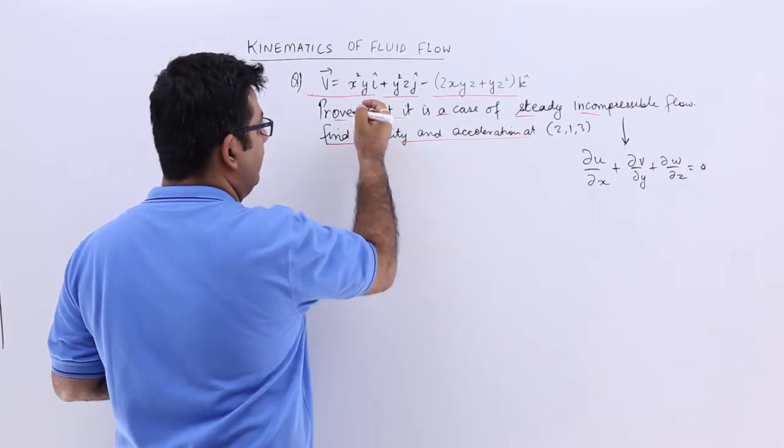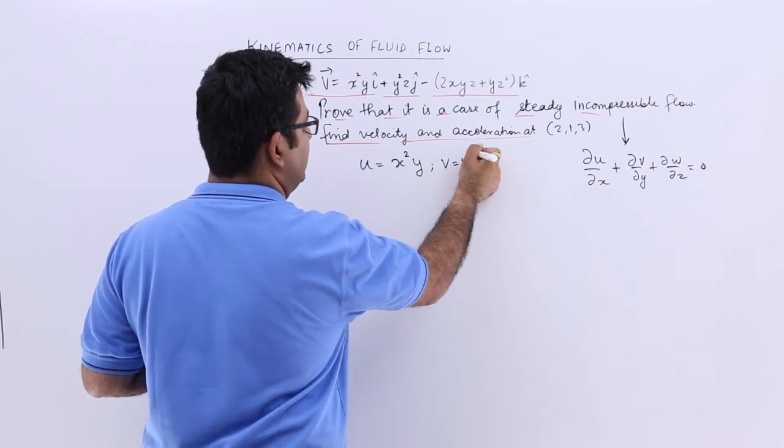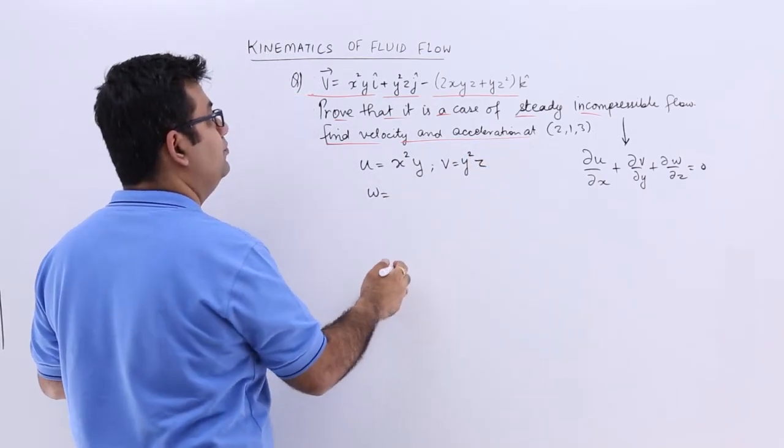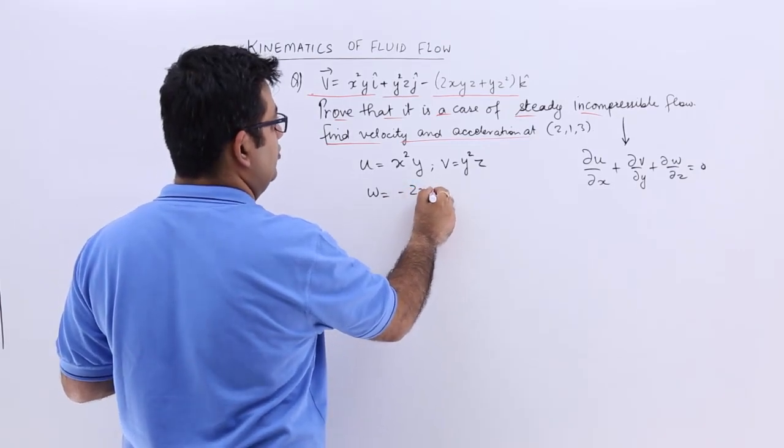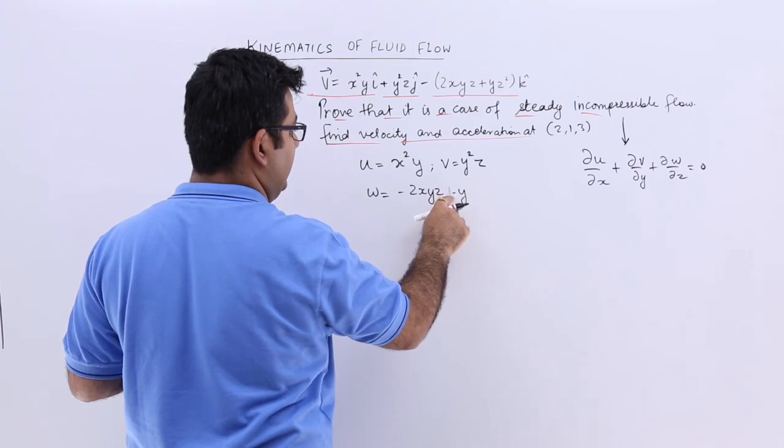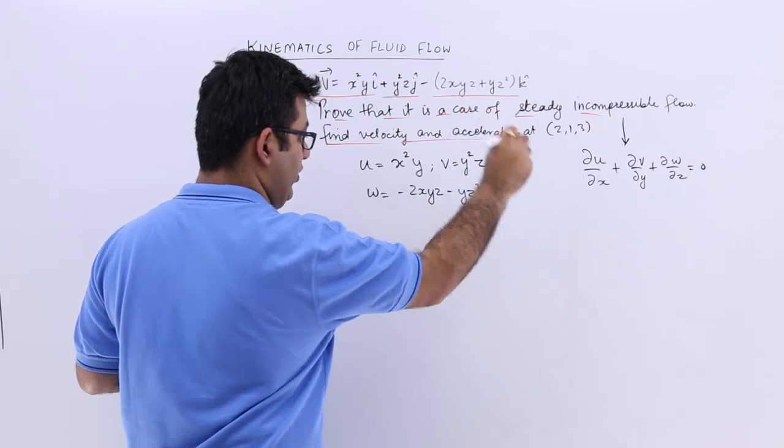So u = x²y, v = y²z and w = -2xyz - yz².